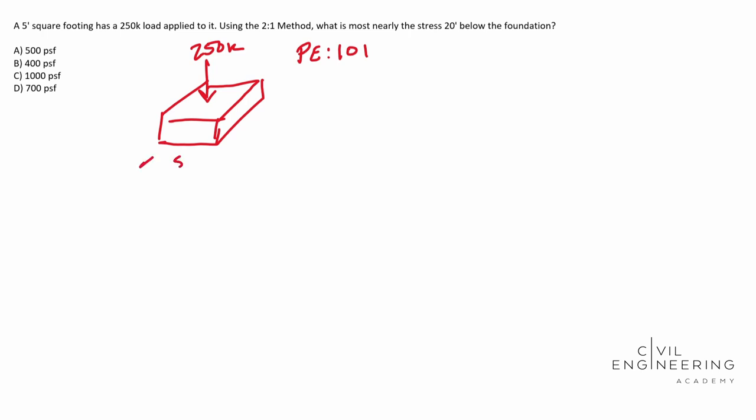So we understand that this is a square footing, meaning that this is 5 feet and this is also 5 feet. So the formula that it gives you for the pressure is going to be your load over B plus Z times L plus Z.